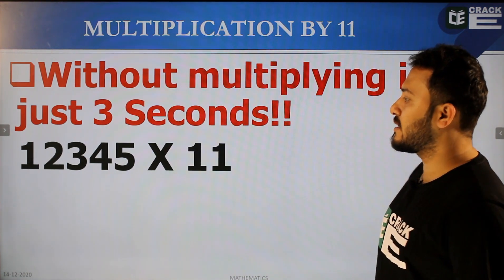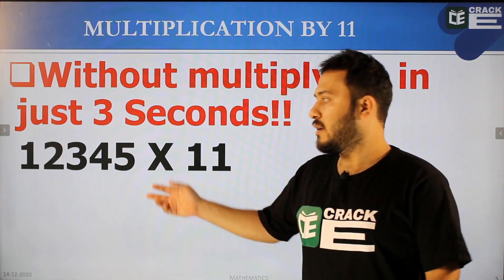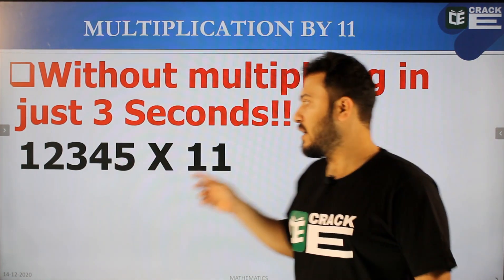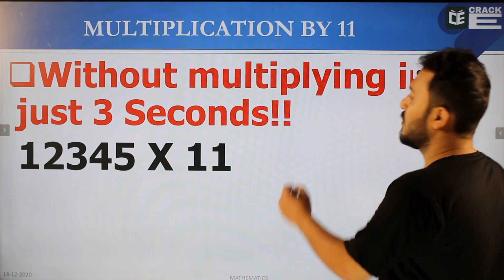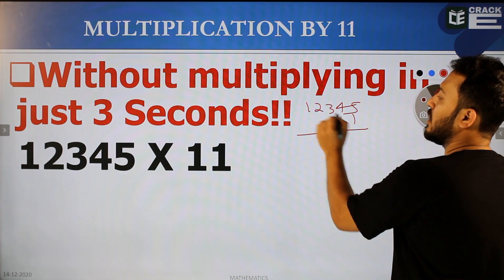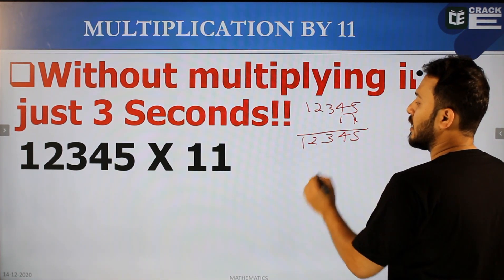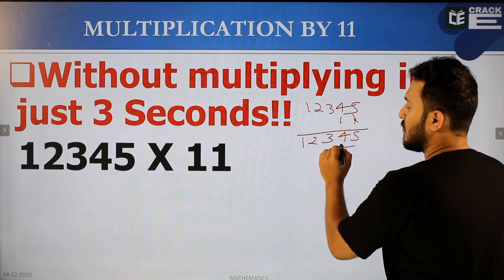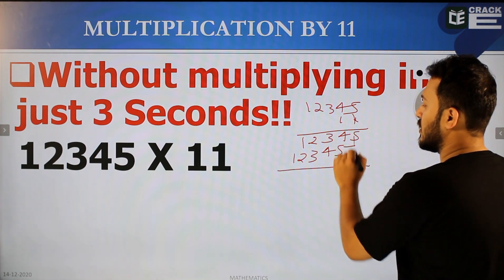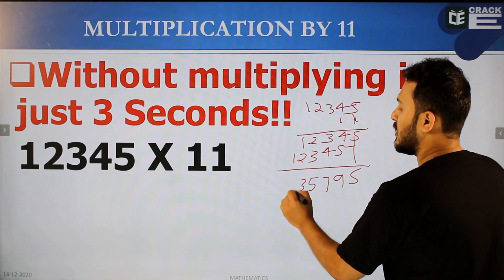Without multiplying in just 3 seconds — this is such a complex problem. How do we multiply in 3 seconds? For multiplication by 11, the main thing is: take a number like 12345 and multiply by 11. We write the digits and add adjacent digits. Going through: 5, 4+3=9 wait — the sequence becomes 1, 2, 3, 4, 5 into 11. We increase by adding adjacent digits: 5, 9, 7, 5, 3, 1 — giving 135,795.